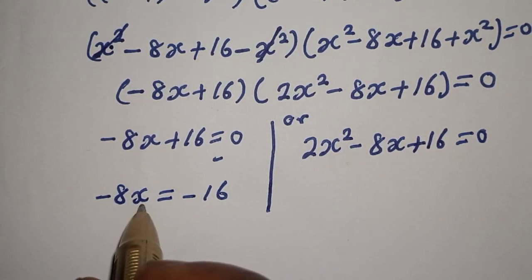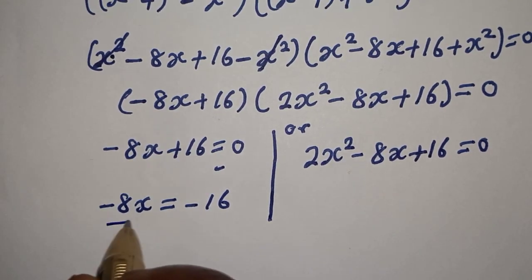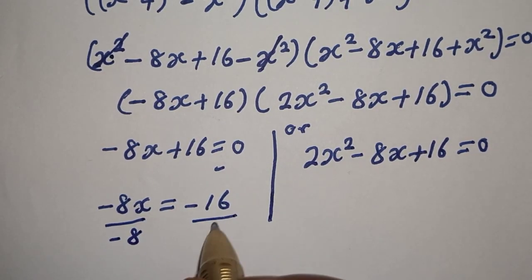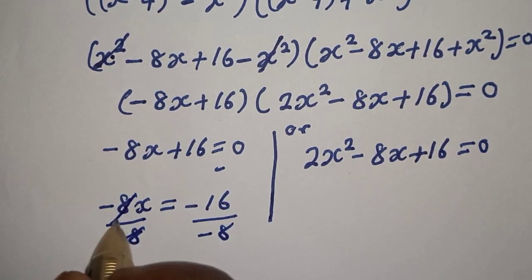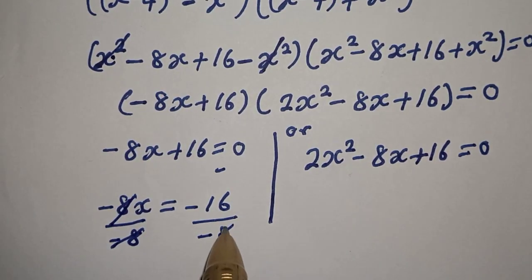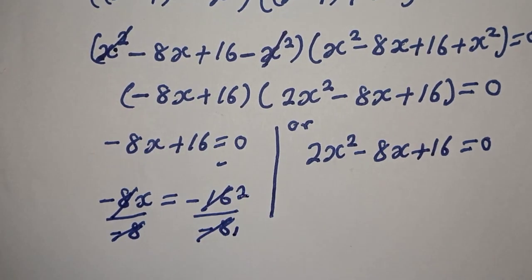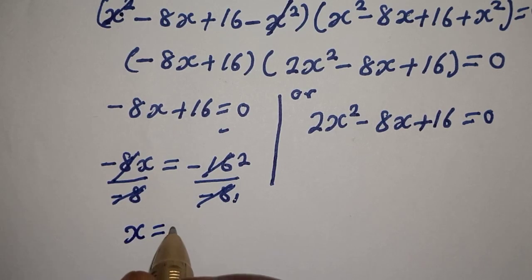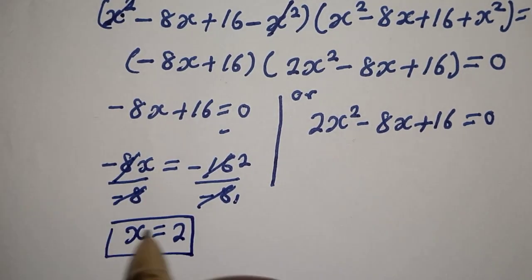Now let's divide both sides of the first equation by minus 8. Dividing by minus 8 on both sides, we cancel the minus 8, giving S is equal to 2. This is the first value of S.